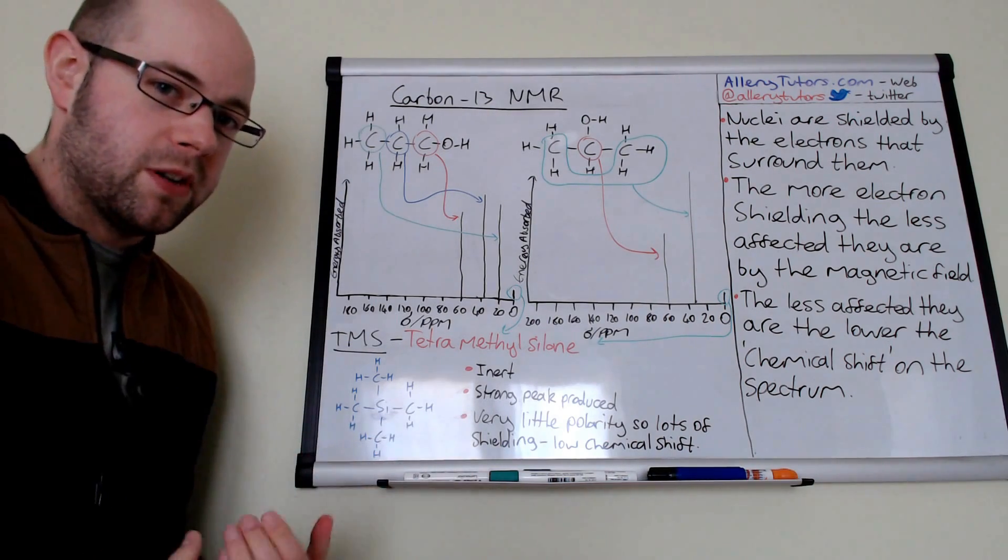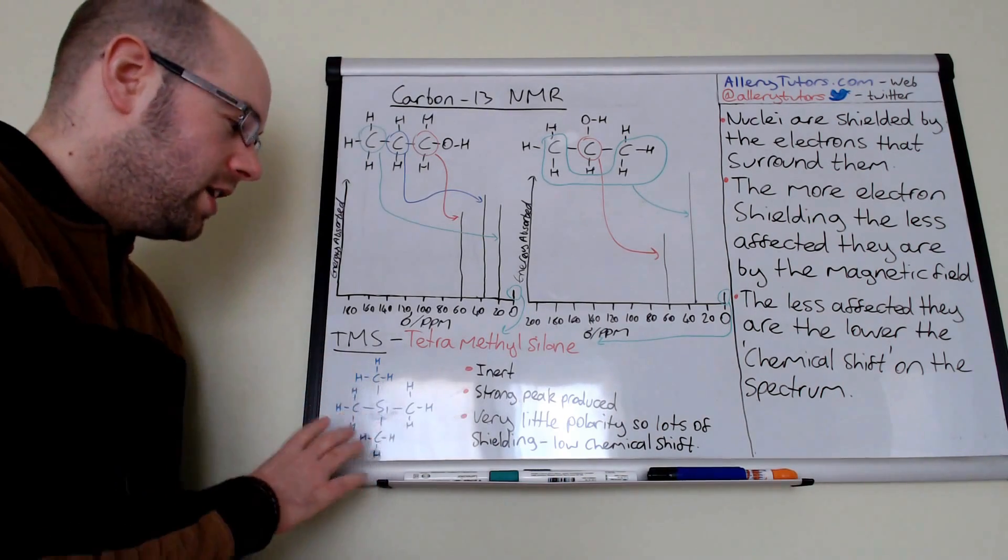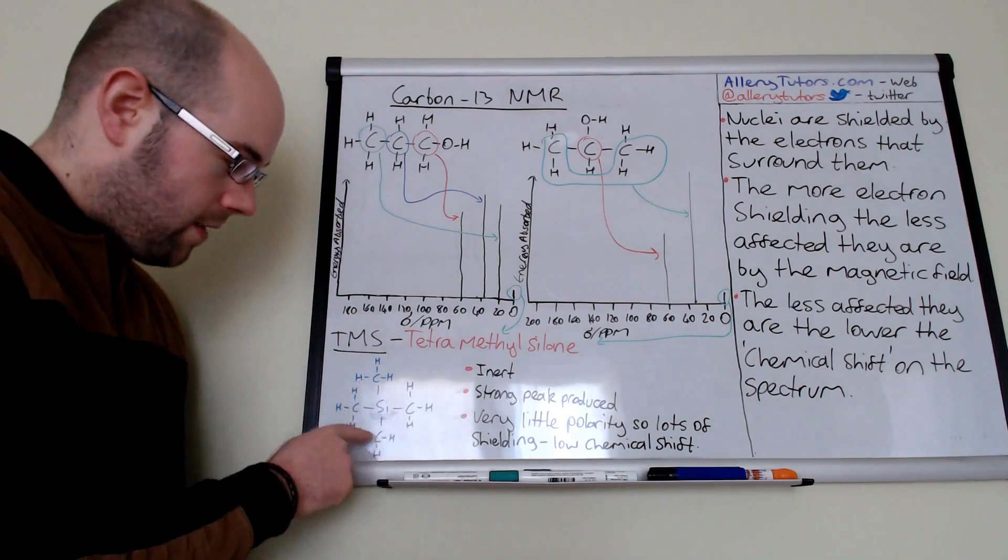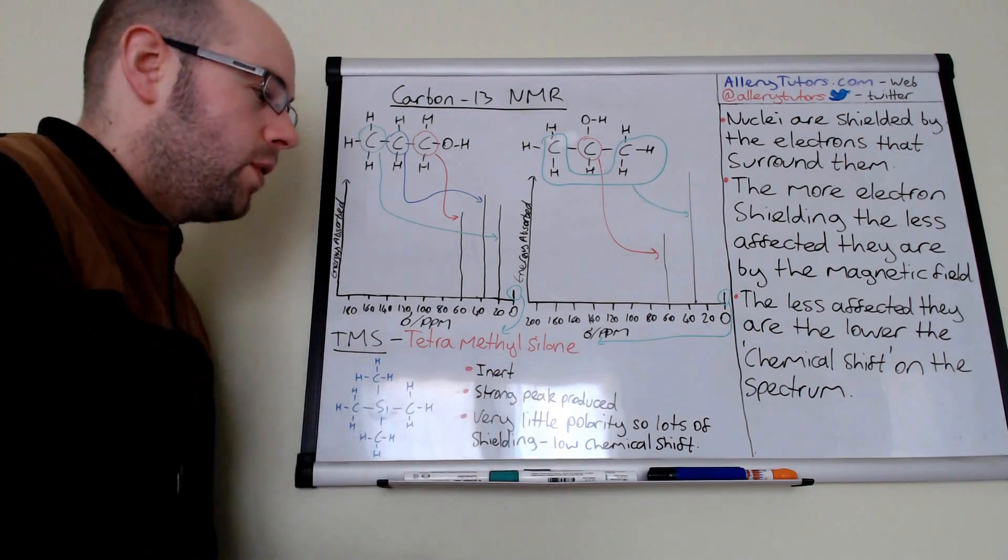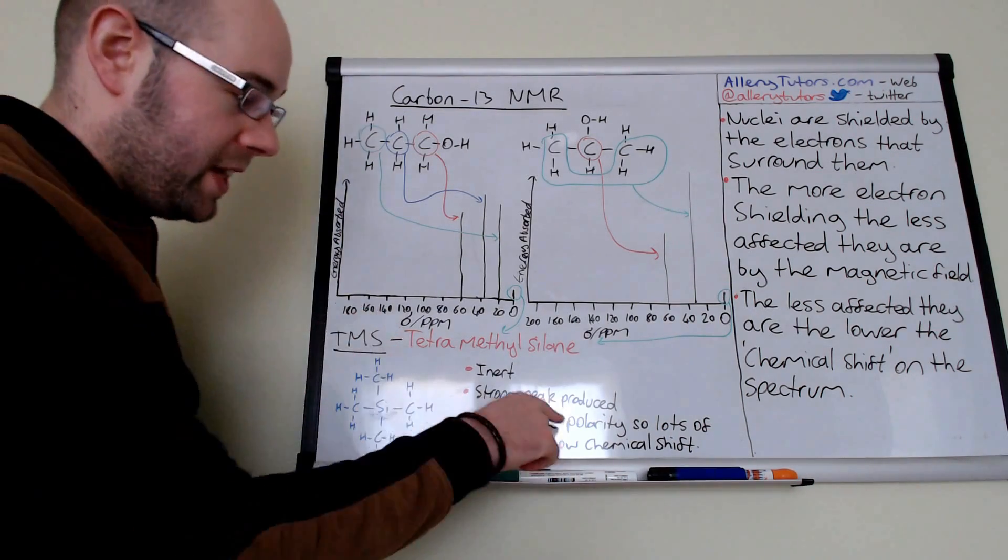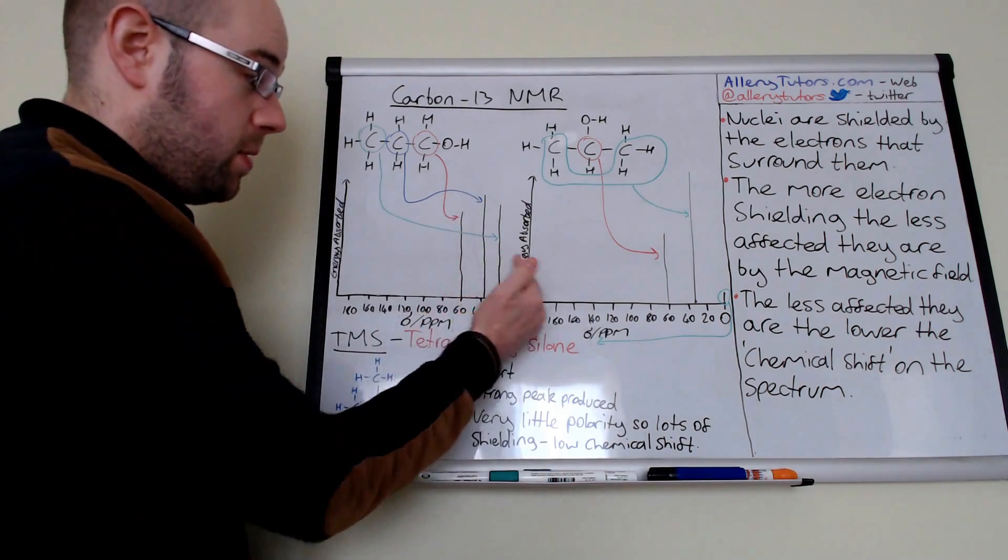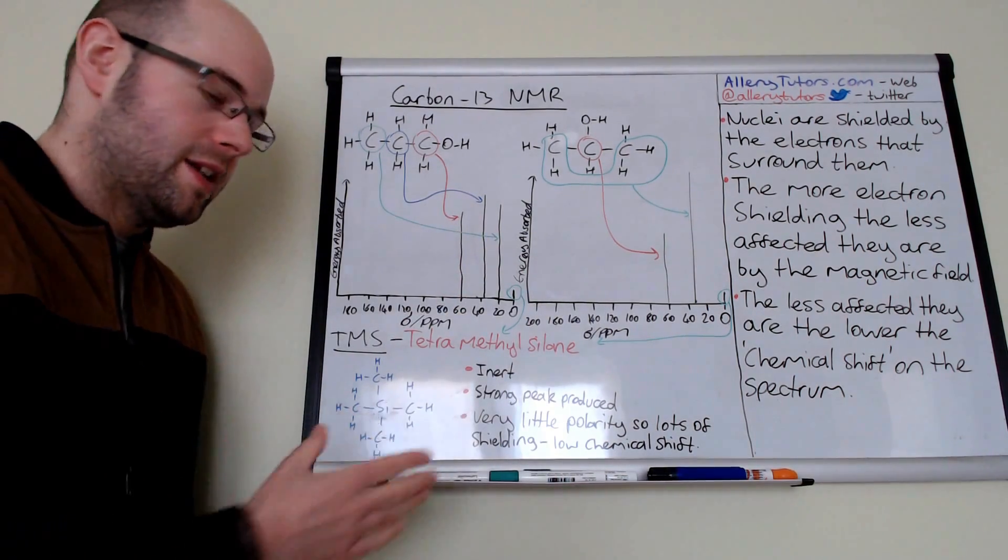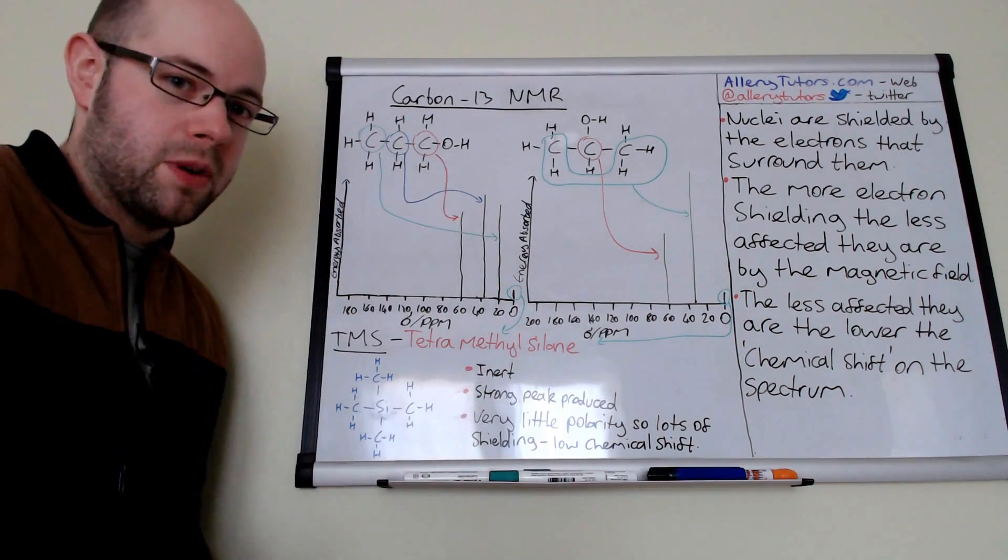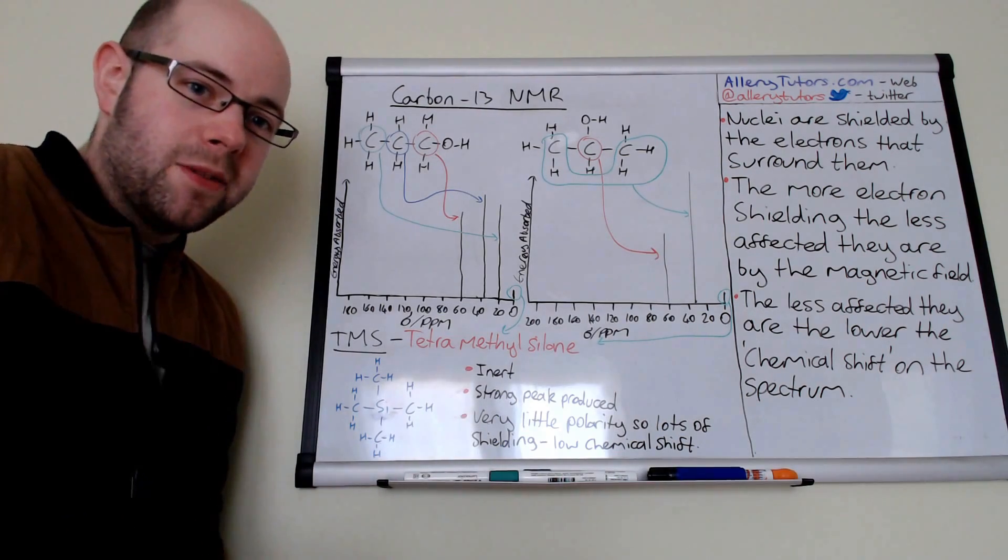And also there's very little polarity in this molecule. It's one of the most non-polar molecules you'll see in chemistry. And there's no polarity in there or very little. So there's loads of shielding around these carbons here. So therefore you'll get a very, very low chemical shift. And so therefore the peak that this will create on an NMR machine is going to be well up to the right anyway, completely different from most other organic molecules that you could put in there to analyze. But that's it. Hope that helps. Bye.